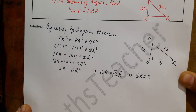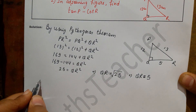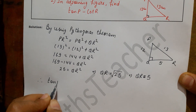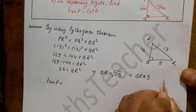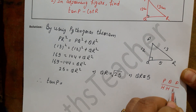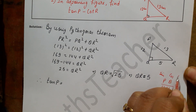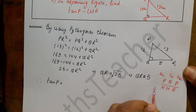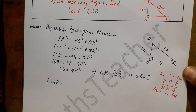We need to find tan P minus cot R. First we find tan P. We need to remember the ratios for this chapter: sin equals P upon H, cos equals B upon H, tan equals P upon B, and cot equals B upon P.